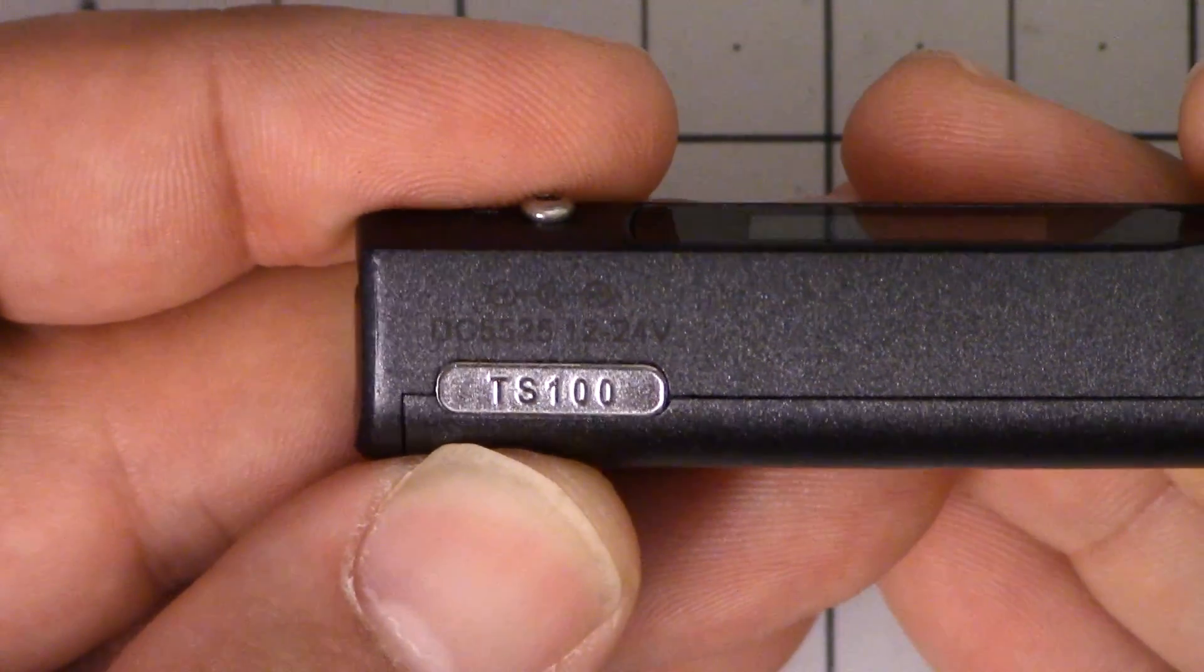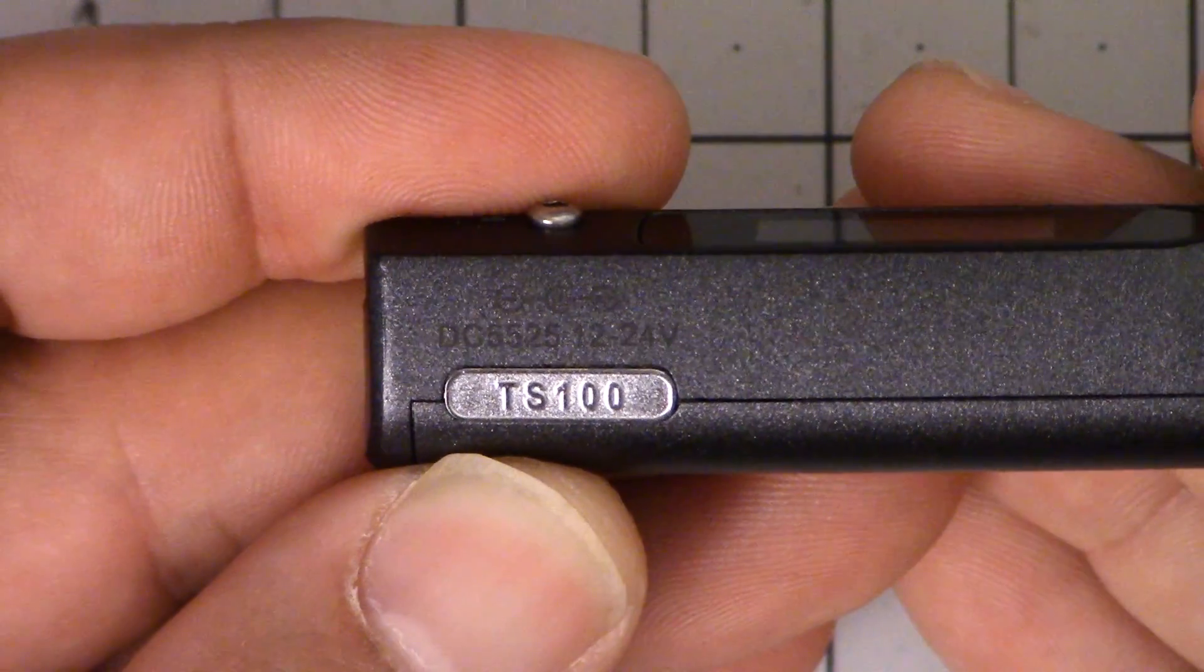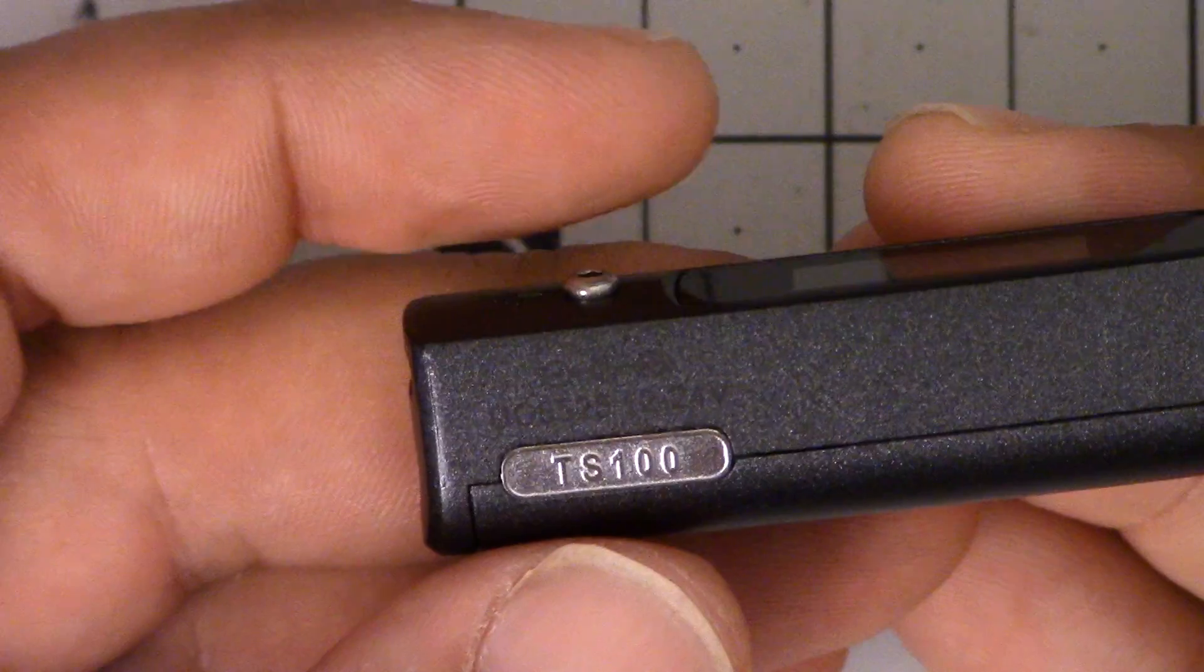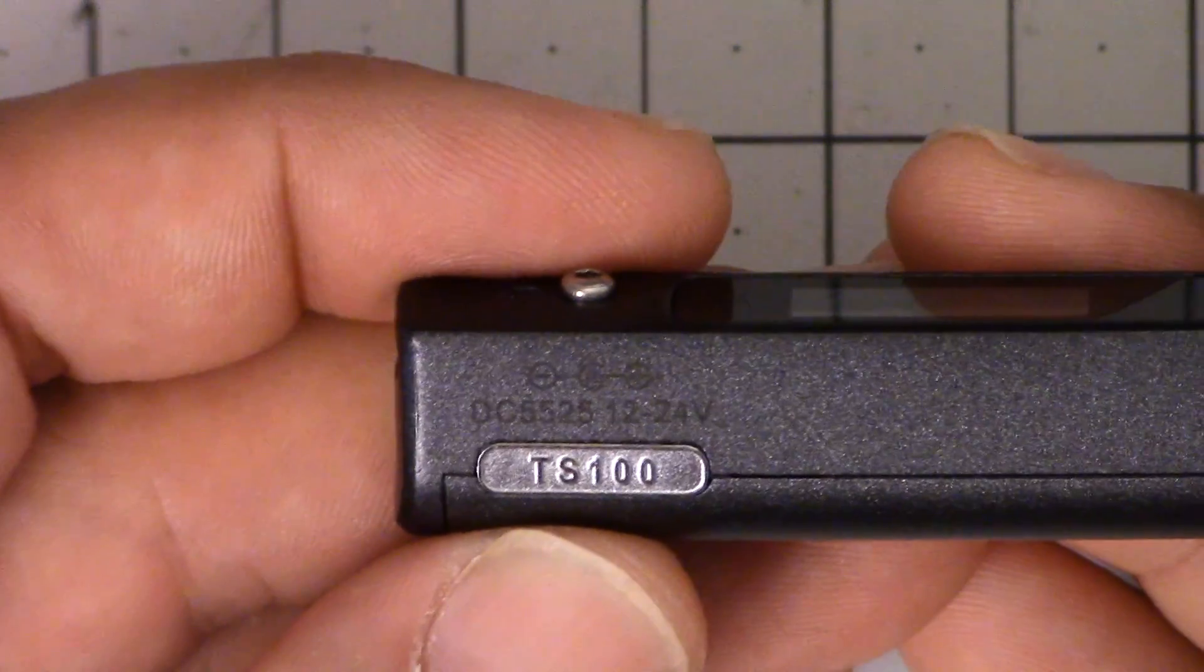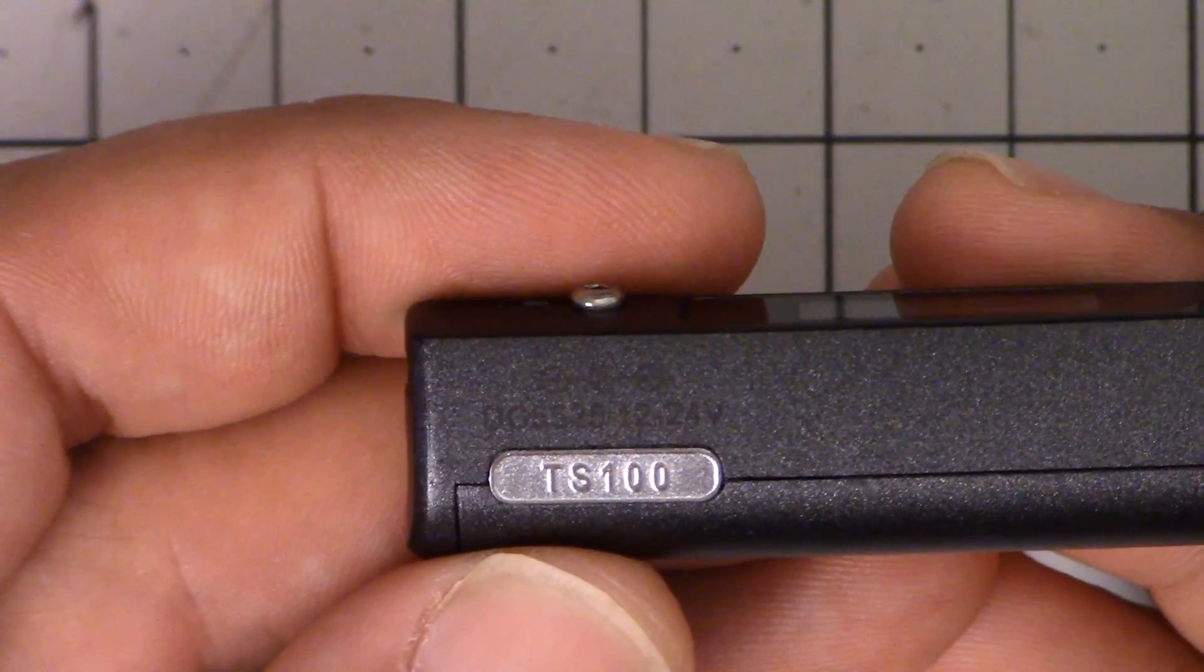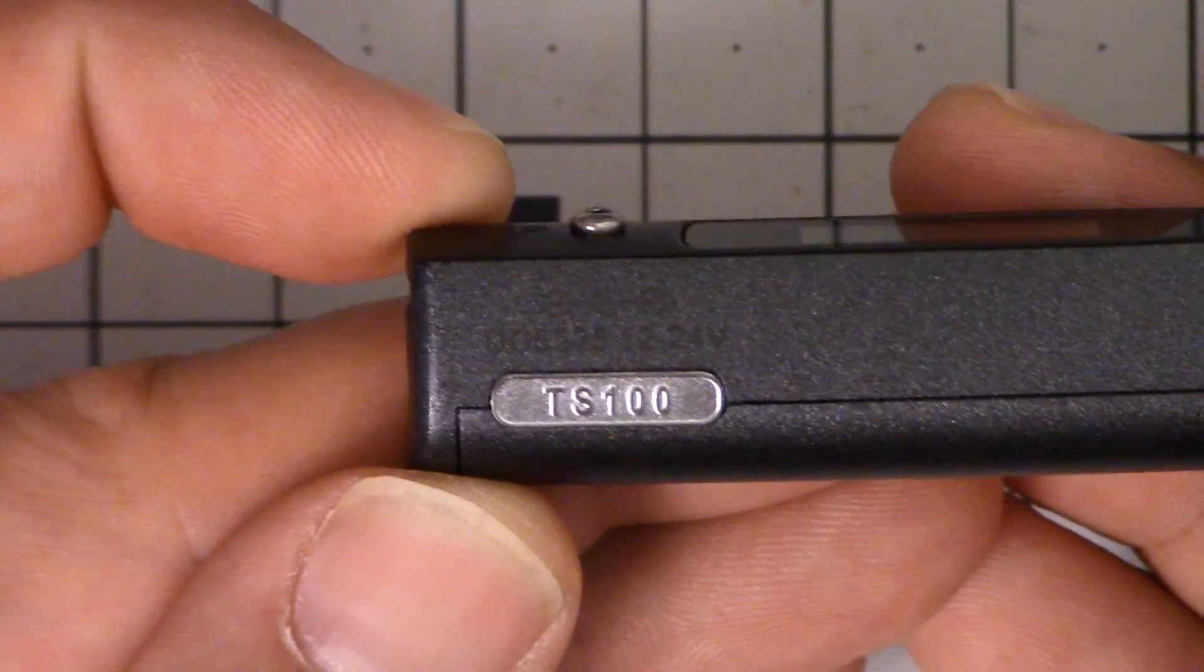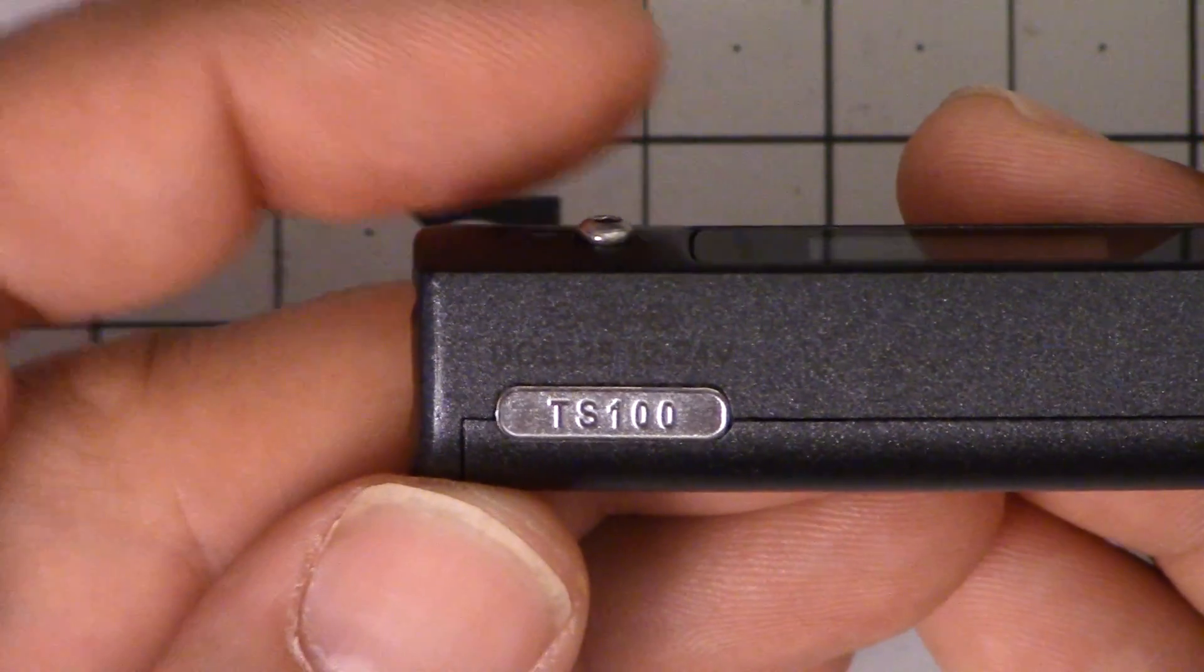As we see here down at the base, this iron can run off of anything from 12 to 24 volts input power. What that means is that you can run it off of a 3S, 4S, 5S, or maybe even a 6S battery. You can run it off of any of your most common flight packs if you so desire, or you can run it off an electrical adapter.